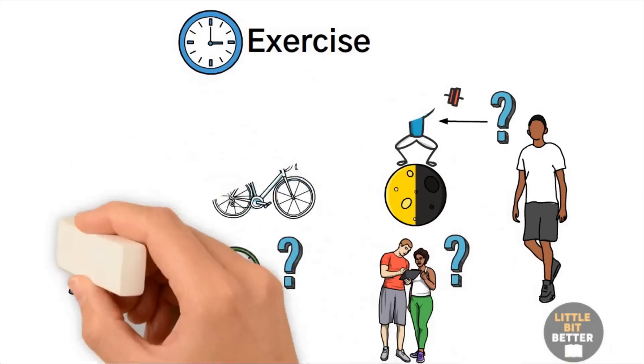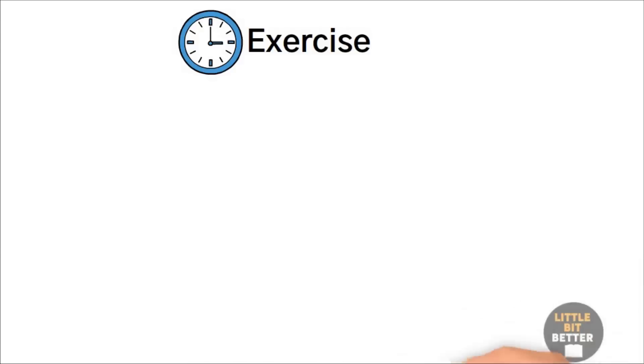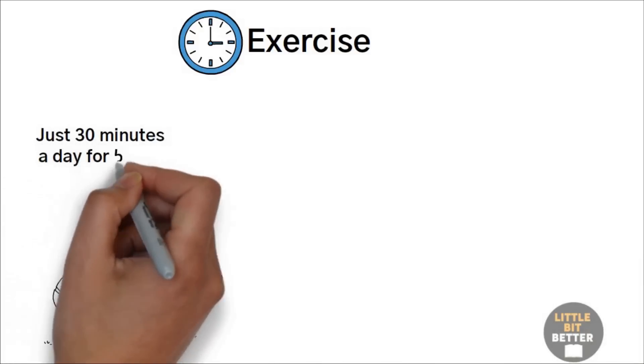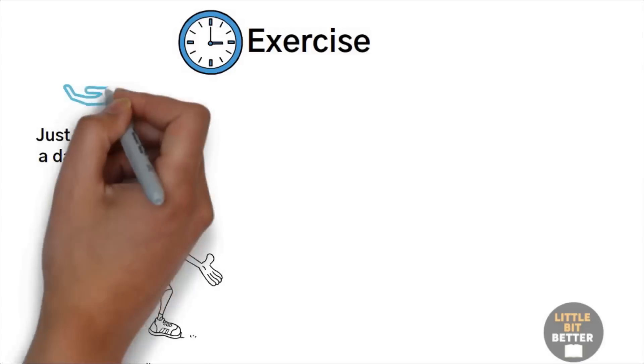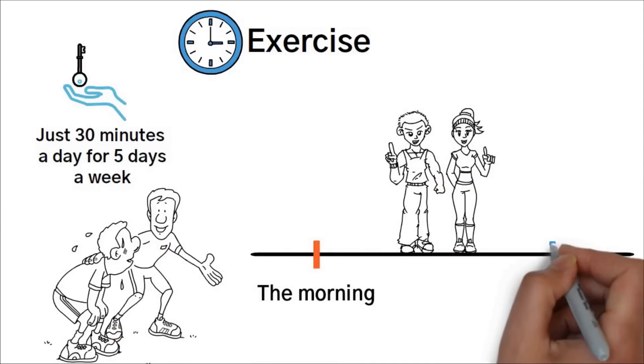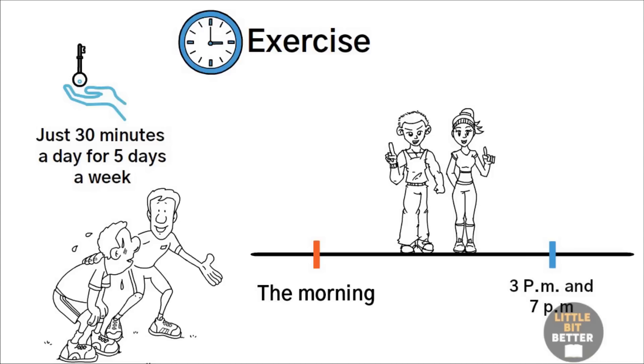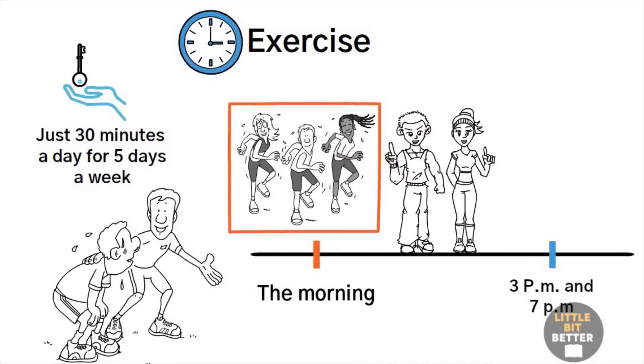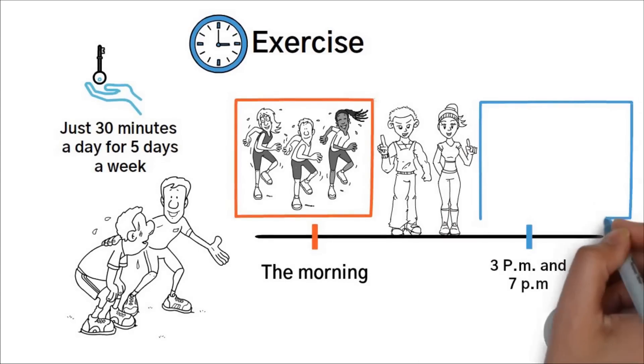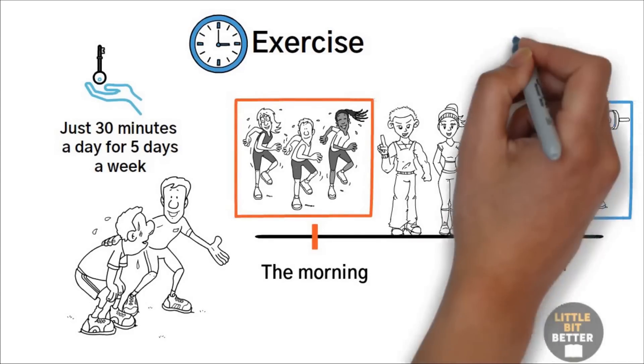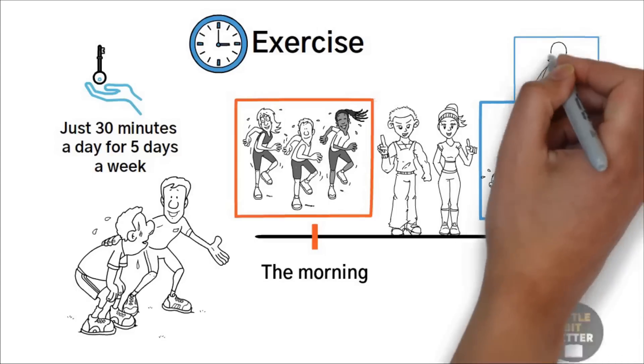The good news is that we don't need to exercise several hours a day to be healthy. According to the author's studies, just 30 minutes a day for five days a week is enough to make a difference. The best times of the day to exercise are in the morning and in the late afternoon, between 3 p.m. and 7 p.m. While mornings are great for aerobic and stretching exercises, late afternoons are the ideal time for strength training because your body will be at its peak of preparation for heavy work. This way you can avoid injuries and have a better recovery.